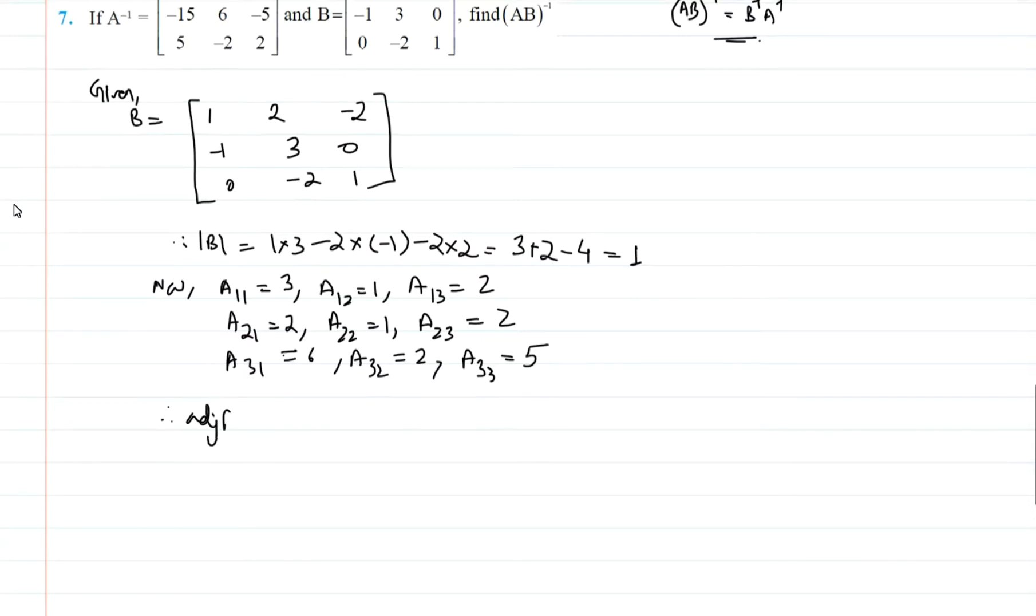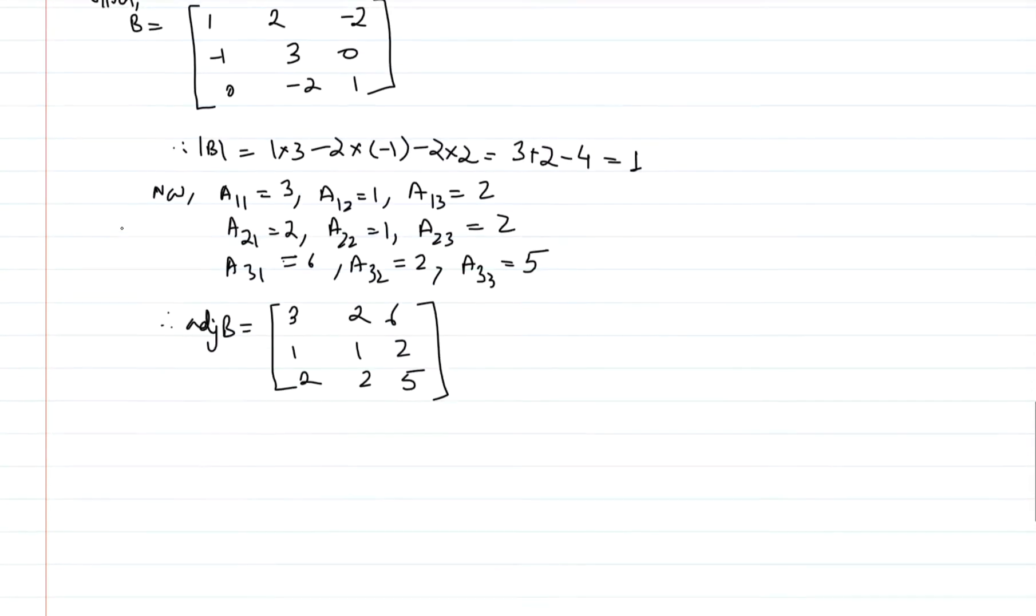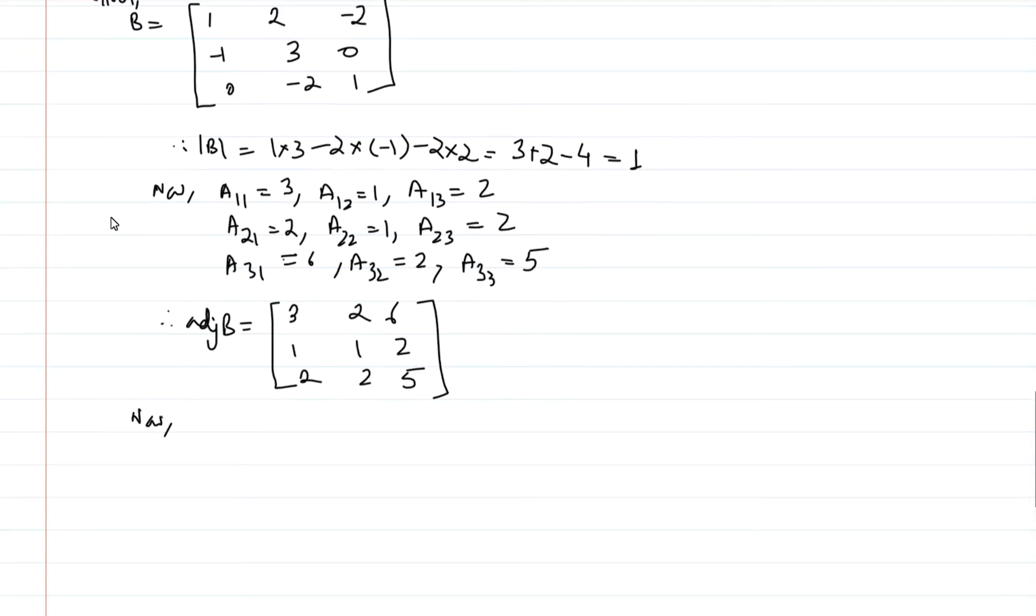Now I am going to write the cofactor of this. You can tally with yourself if it is correct, then proceed for the next step. Therefore adjoint of B equals the matrix 3, 2, 6, 1, 1, 2, 2, 2, 5. You know that adjoint is the transpose of cofactor matrix. So we have B inverse is equal to 1 by determinant of B times adjoint of B. But you know that determinant of B is 1, so B inverse is equal to adjoint of B.